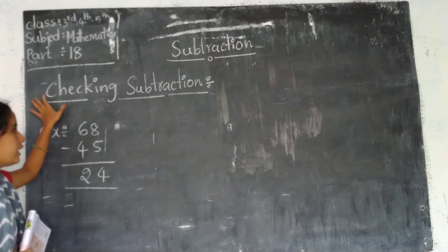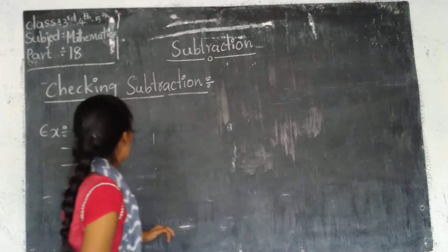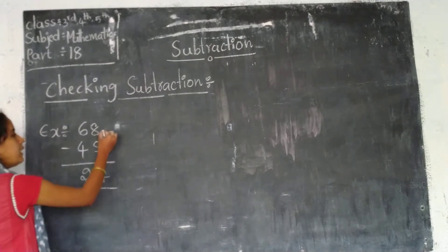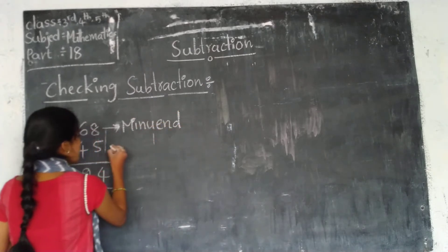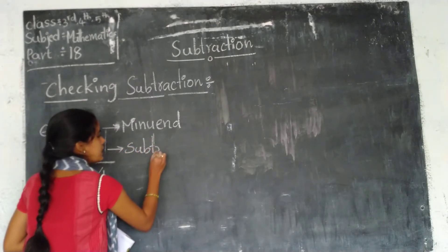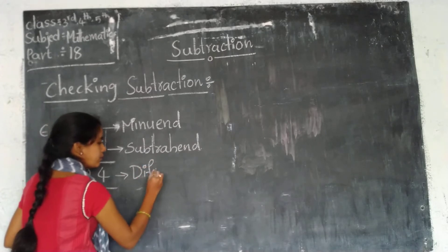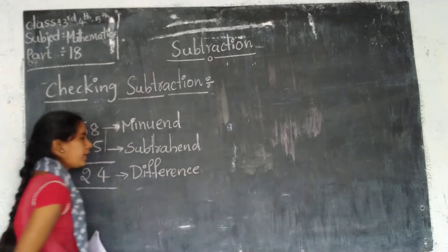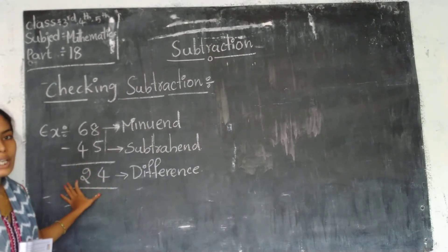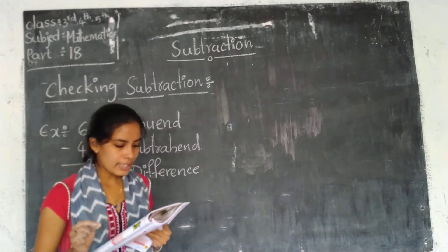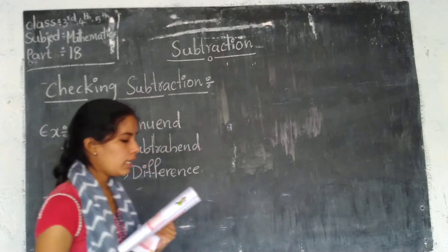Next, how to check subtraction — whether our answer is correct or not. Let's see. Here we do a normal subtraction. The bigger number is called the minuend, and the smaller number is called the subtrahend. The answer of the subtraction is called the difference. Our answer here is 24. Is 24 correct? To check whether we subtracted correctly, we add the difference to the subtrahend.